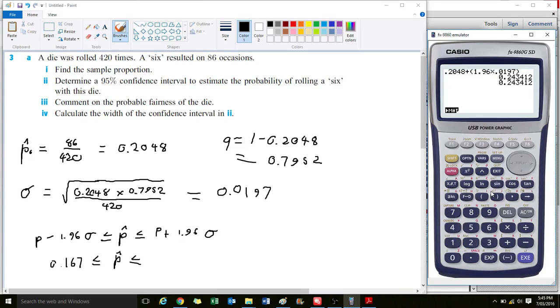What this is saying is that we're 95% confident that the probability of rolling a six on this die is between 0.167 and 0.243. Part 3 says comment on the probable fairness of this die.